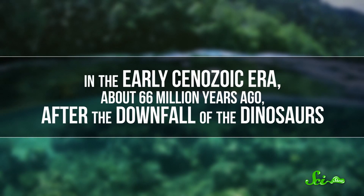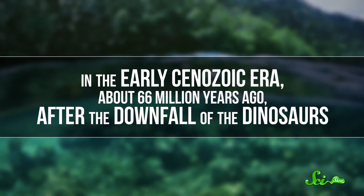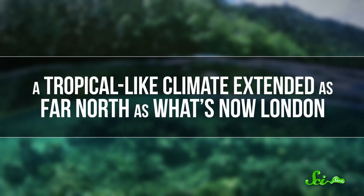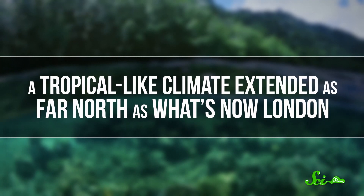In the early Cenozoic era, about 66 million years ago, after the downfall of dinosaurs, a tropical-like climate extended as far north as what's now London. The warm climate of the region around the equator has stayed pretty much undisturbed since then, which has left plenty of time to accumulate diversity.